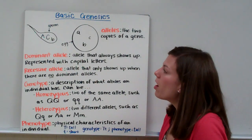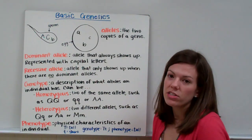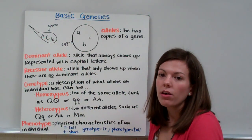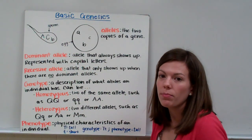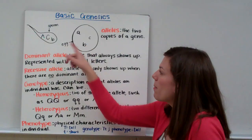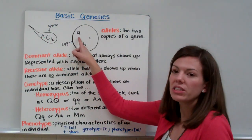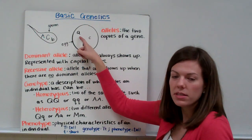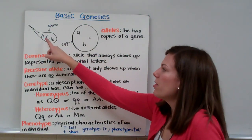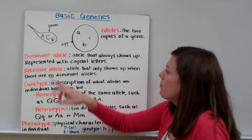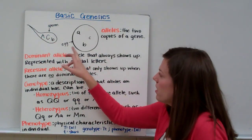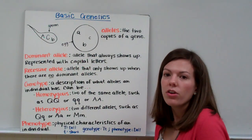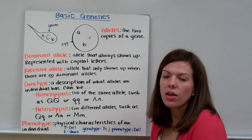Recessive alleles will not show up if we have a dominant allele. For example, you get a big A and a little A from your Mom and Dad. That big A is going to show up. The little A is recessive — since it's a lowercase letter, it will not show up. But if you get a little B and a little B from your parents, since they're both recessive, you will express the little B trait.